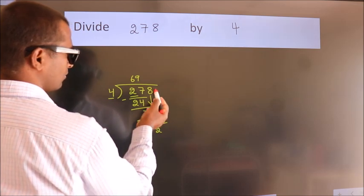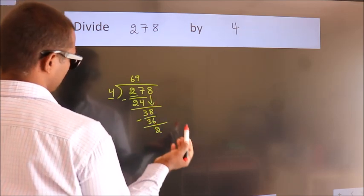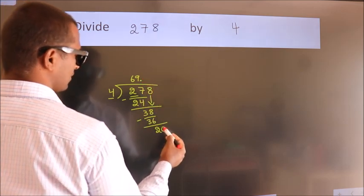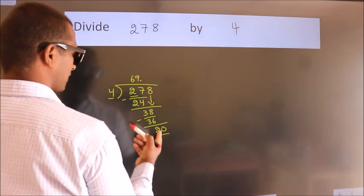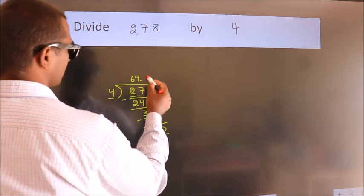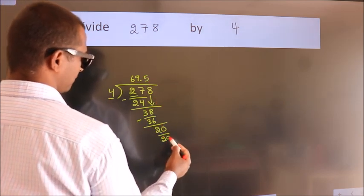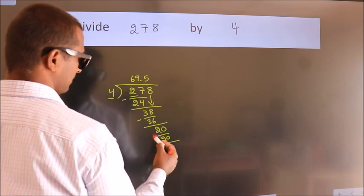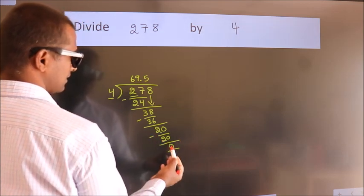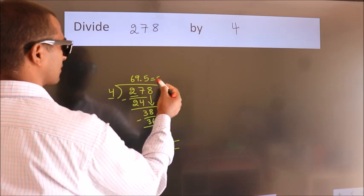After this, no more numbers to bring down. So what we do is we put a dot and take 0. So 20. When do we get 20 in the 4 table? 4 fives is 20. Now we subtract. We get 0. We got remainder 0. So this is our quotient.